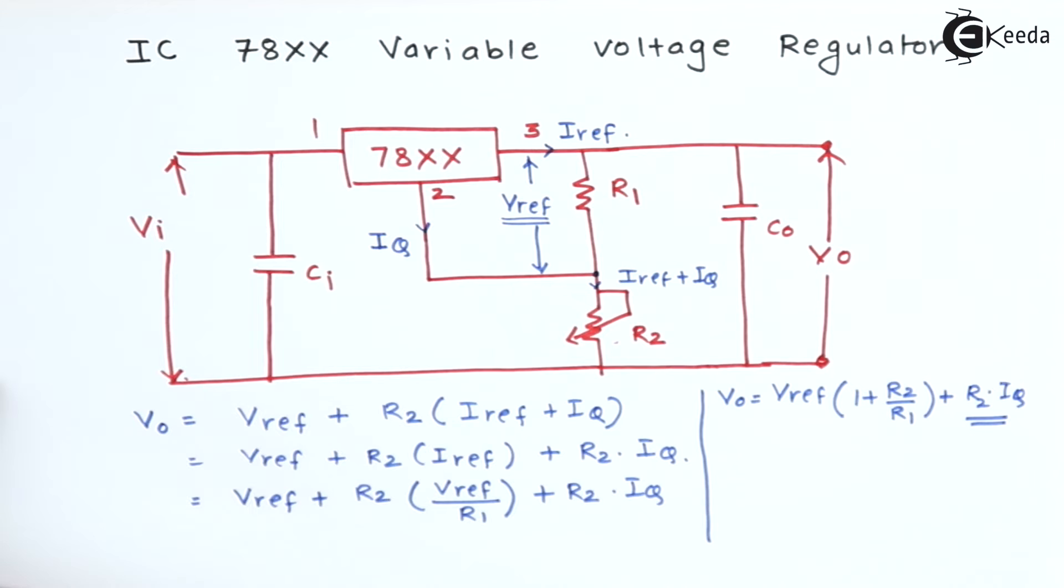As this quantity is very less, it can be neglected. We can write the formula directly: Vo equals V reference times 1 plus R2 divided by R1. This is the output voltage.